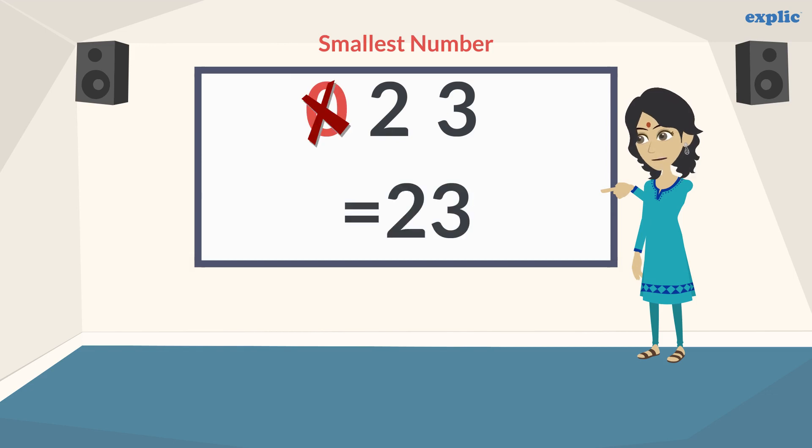Therefore, 023 is actually 23, which is a two digit number.